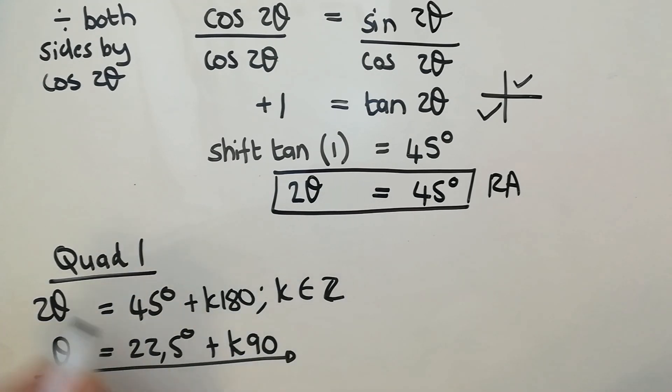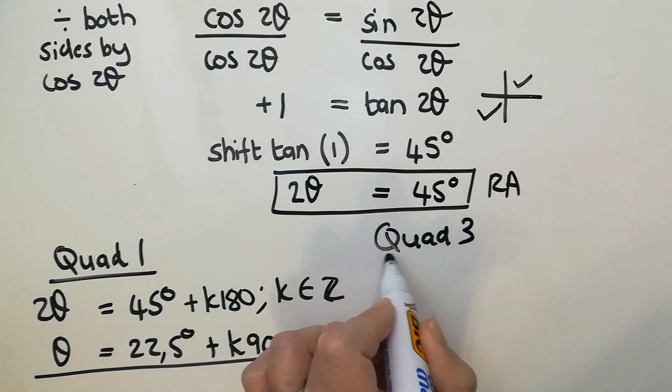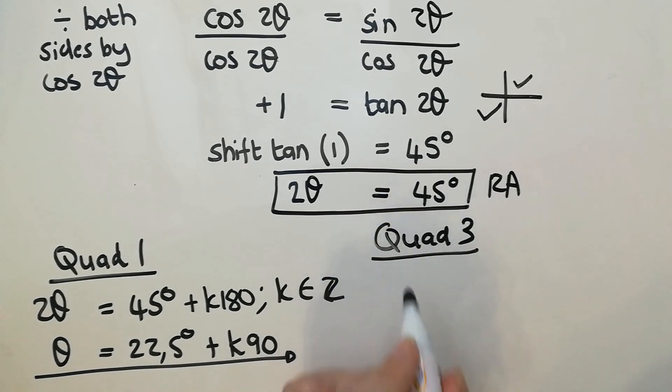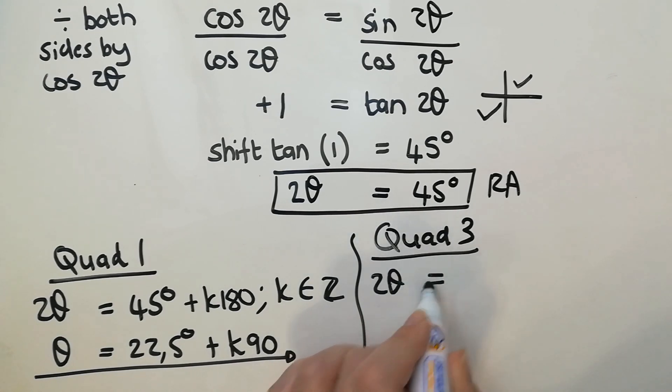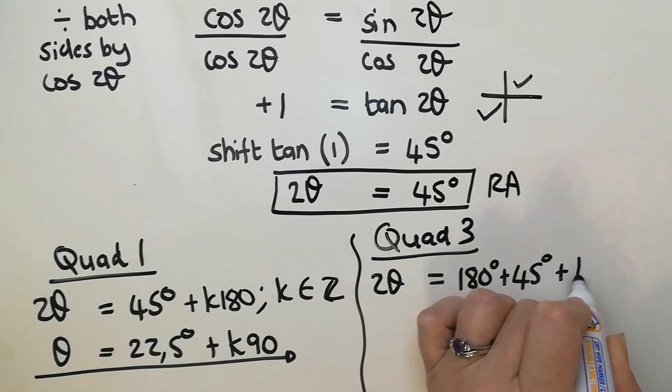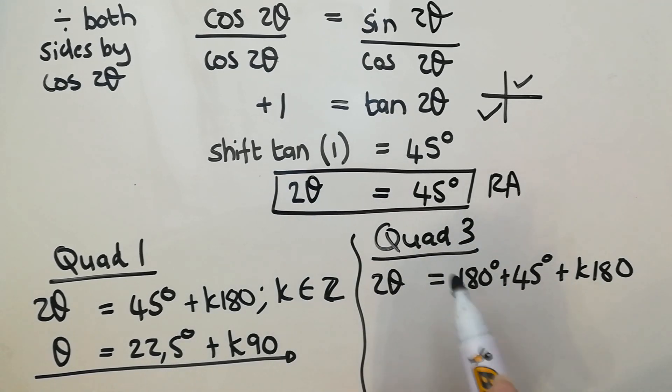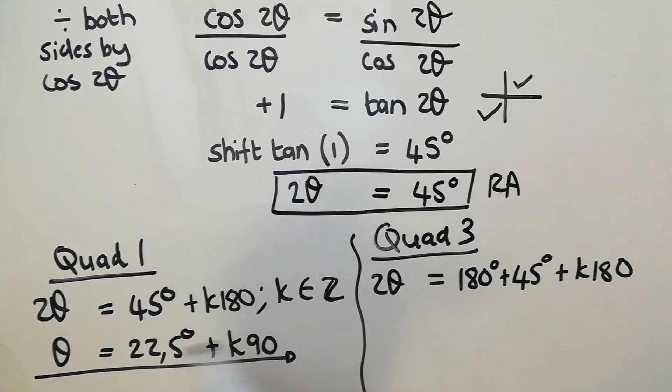And that's the end of the general solution. And then my other one is quad three. In quad three, quad three is the 180 plus quad. So I'm going to say 2θ equals 180 plus the 45 plus k·180. Now, remember that you don't actually have to do this one. And I'm going to show you why when we go to specific solutions. I'm doing it now because it's not wrong to do it. It's just unnecessary. If you want to always do the same steps, do what I'm doing now. But I'll show you in a few minutes how you don't have to.